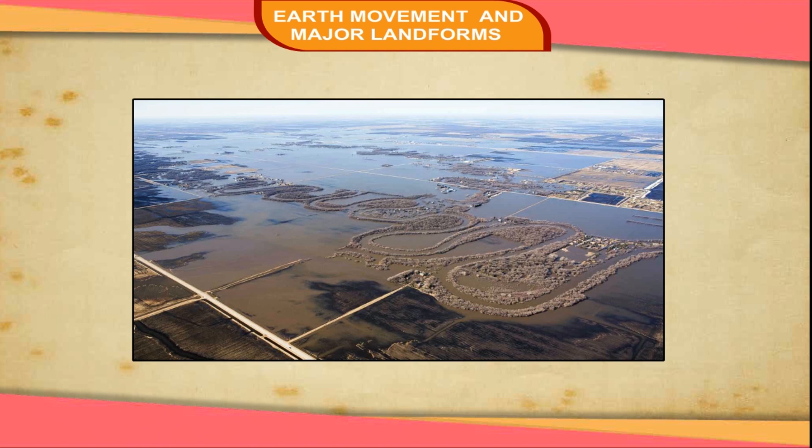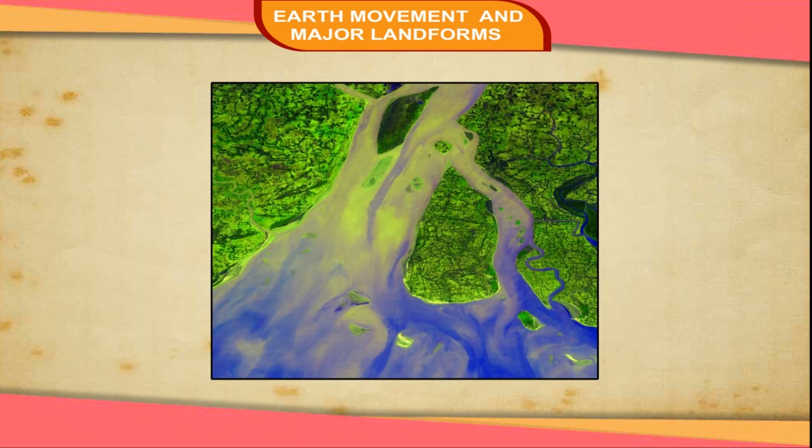As the river approaches the sea, the speed of the flowing water decreases and the river begins to break up into a number of streams called distributaries. Each distributary forms its own mouth. The collection of sediments from all the mouths forms a delta.